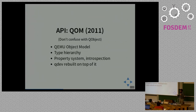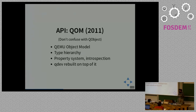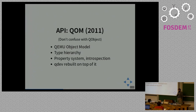Last but not least, we have QOM — the QEMU Object Model. Don't confuse that with QObject, which is something else I won't cover. QOM started as a generalization of QDEV. It has a type hierarchy of classes and a property system. Basically all the abstractions in QDEV were rebuilt on top of QOM, so many of the QDEV code paths are just wrappers around QOM.